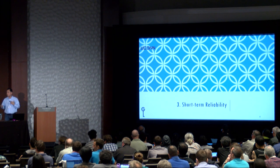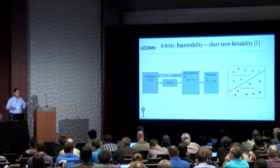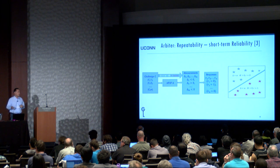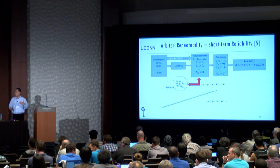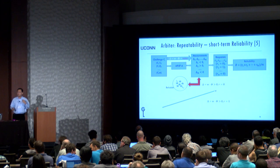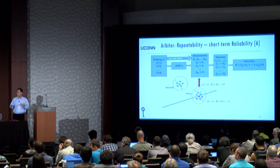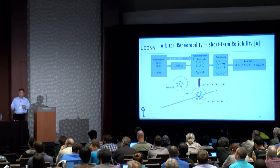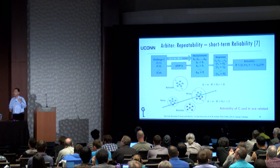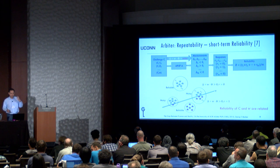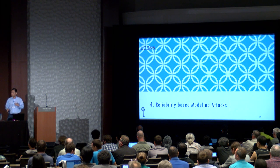We need to understand the concept of short-term reliability. Given a PUF and a challenge, you can measure the challenge many times and get many responses, then calculate its reliability. If a challenge is very reliable, the delay difference delta is very far from zero, making it insensitive to environmental noise. If the challenge is not very reliable or noisy, delta is very close to zero and can easily flip from 0 to 1 or 1 to 0. This leaks information about delta, which is why we can exploit such information to attack Arbiter PUF or XOR Arbiter PUF.